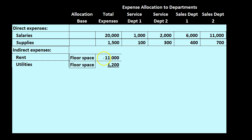We know the totals: rent is 11,000 and utilities is 1,200. What we don't know is how to break them out into the four departments. You could divide by four, but departments aren't the same size most likely — so we have to allocate based on size or some relevant activity. We use an activity base, and for floor space we would think that's a reasonable ratio to use to allocate expenses related to rent and utilities. To do that we need the floor space for each department.